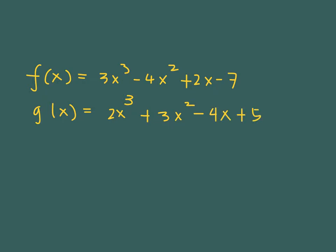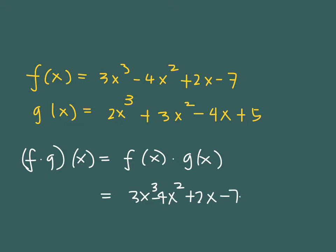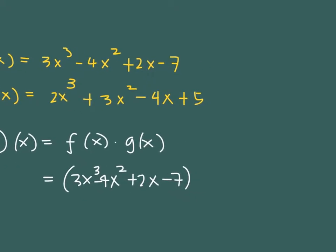So as you can see, if we will be multiplying the two expressions, this will be f times g of x is equal to f(x) times g(x). And that would mean (3x³ - 4x² + 2x - 7) to be multiplied with (2x³ + 3x² - 4x + 5).